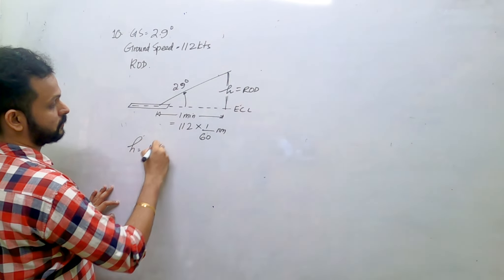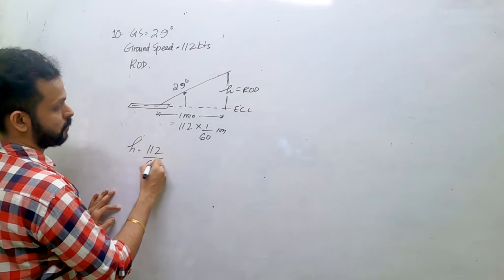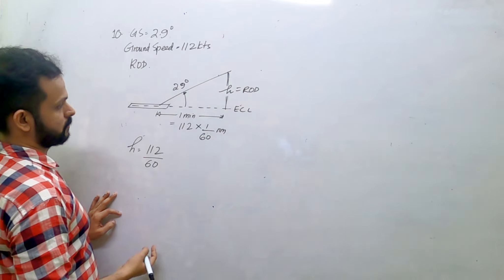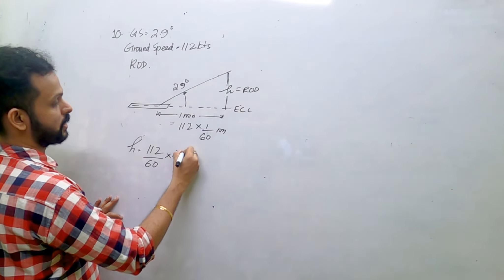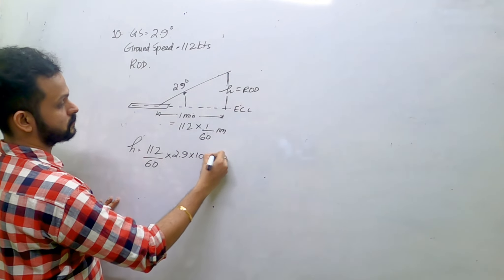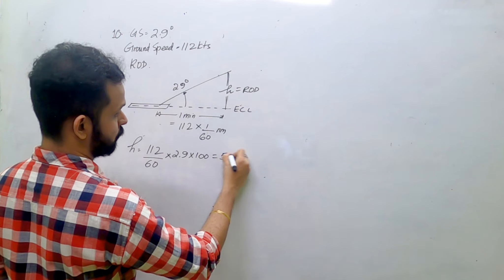Now to find the height, it is 1.8 nautical miles. So this is - yeah okay, 112 by 60 into 2.9 into 100. How much is that? 522 feet. 522 feet.